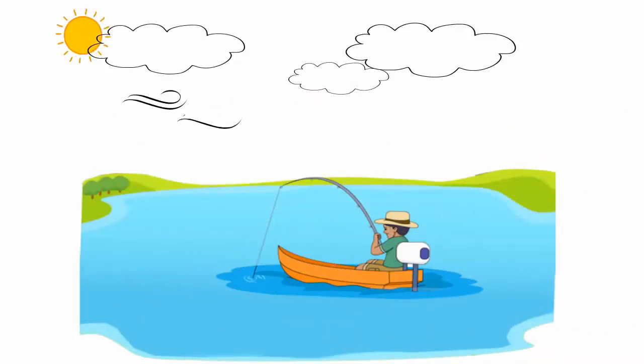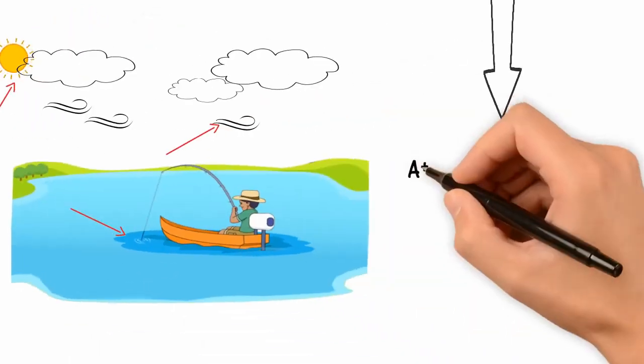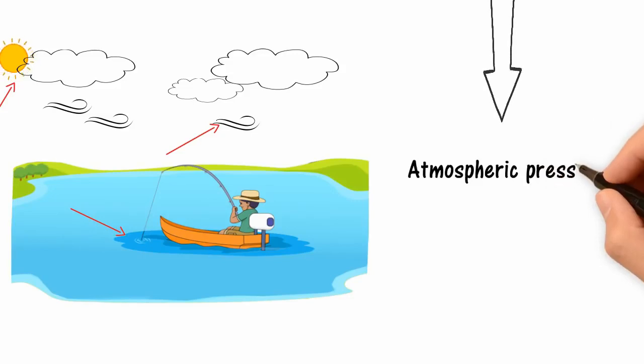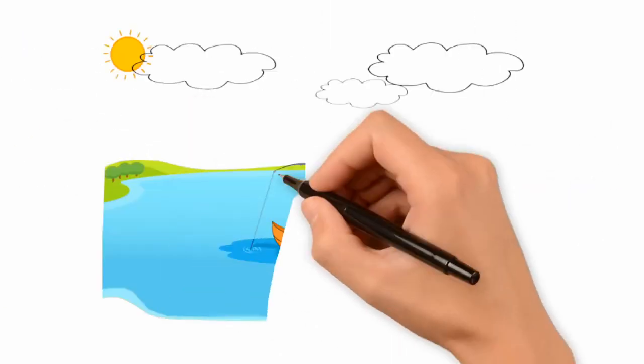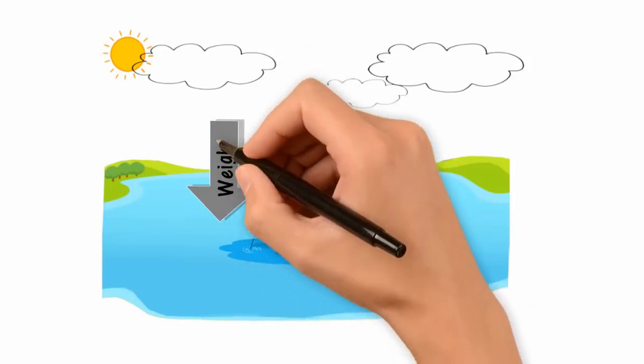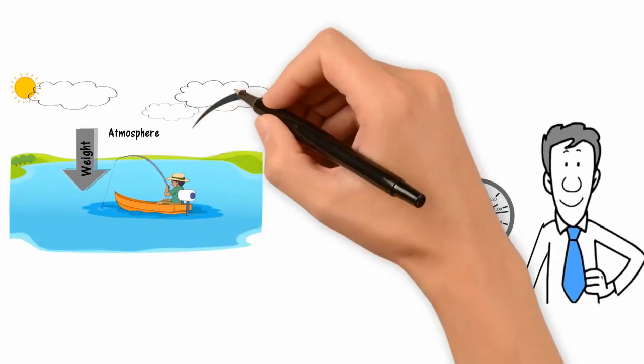Many factors affect fishing - wind, current, temperature, etc. - but none is so critical to understand as atmospheric pressure, also known as barometric pressure. Simply put, the atmosphere has weight. We use a barometer to measure the weight or force exerted by the atmosphere.